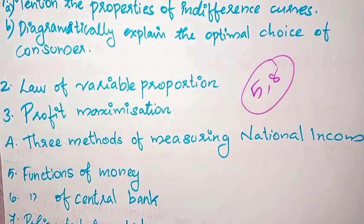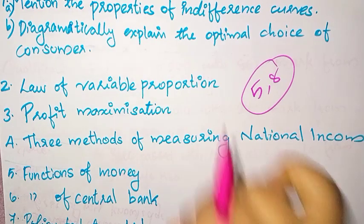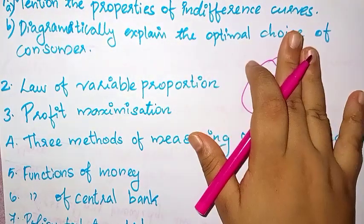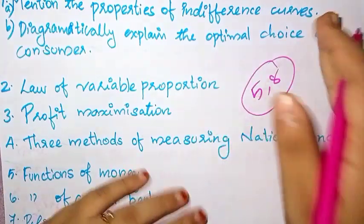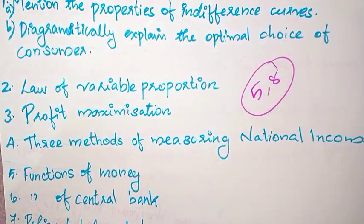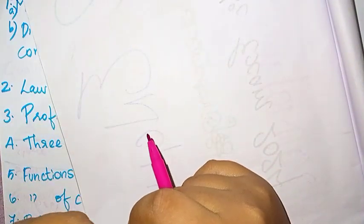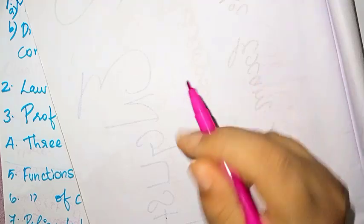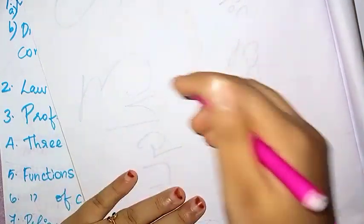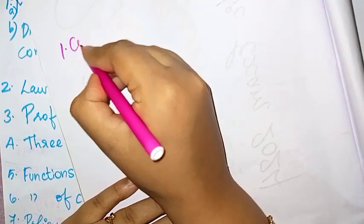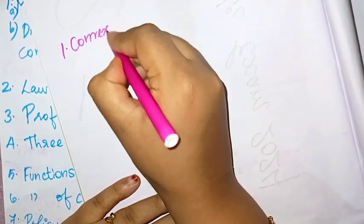The first question is: we will mention the properties of indifference curve and then diagrammatically explain the optimal choice of the consumer. We are going to talk about everything — we will answer how to answer it. First, we will mention the properties of indifference curve. The indifference curve is convex in shape.